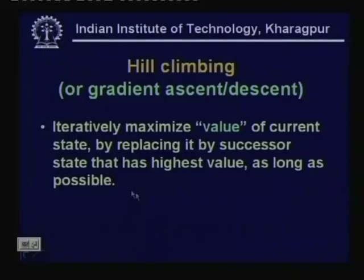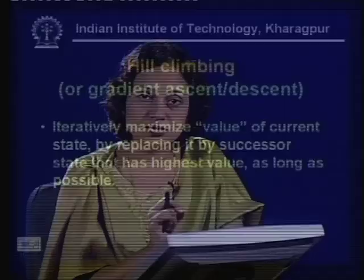Hill climbing is a local search method, also called gradient ascent or gradient descent. The idea is to start with a current configuration and move to a new configuration that improves the objective. For n-queens our objective is to minimize conflicts, so we start with an arbitrary configuration, find all neighboring configurations, and move to the neighbor with the minimum number of conflicts — that is why it is called hill climbing.